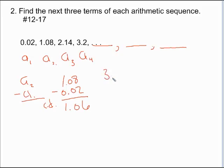So we have 3.2 plus 1.06 equals 4.26. So that's one of them.